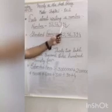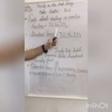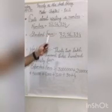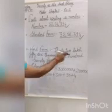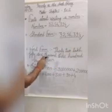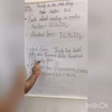For example, we have a number 32,56,394. So we can write any number in three forms. The first one is standard form, which is in figures: 32,56,394. Our second form is the word form, in which we can write any number in words or in spellings, such as 32,56,394.